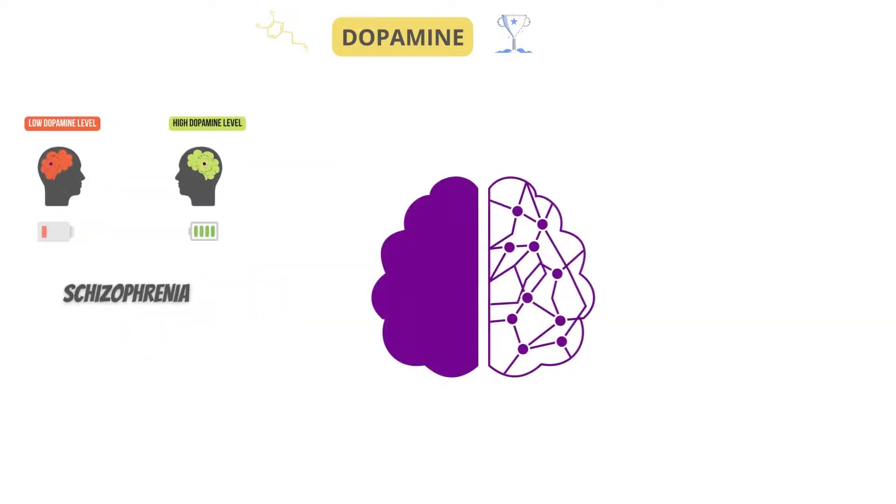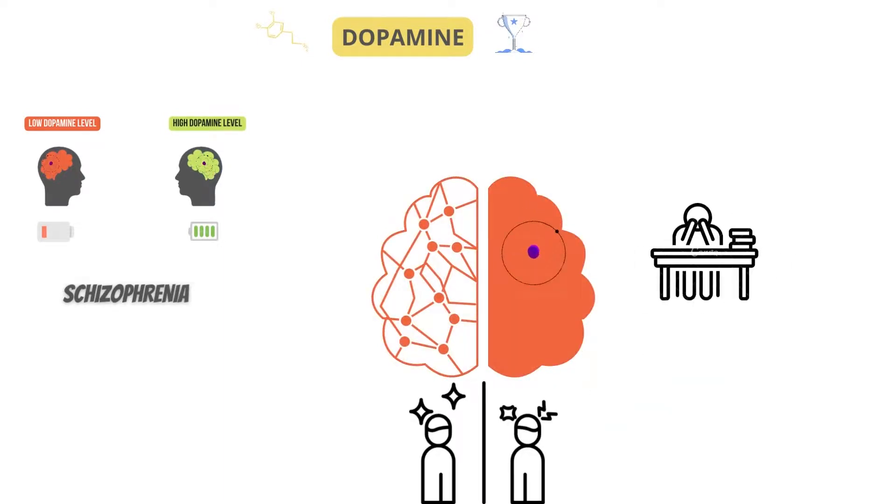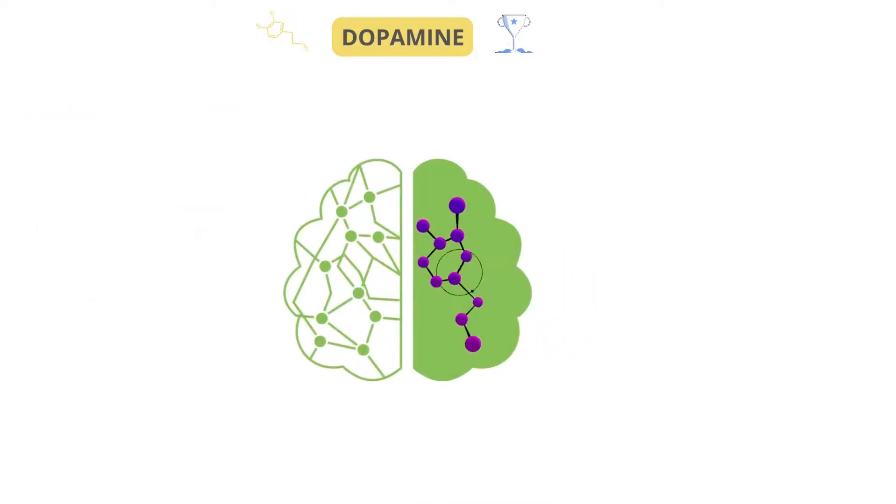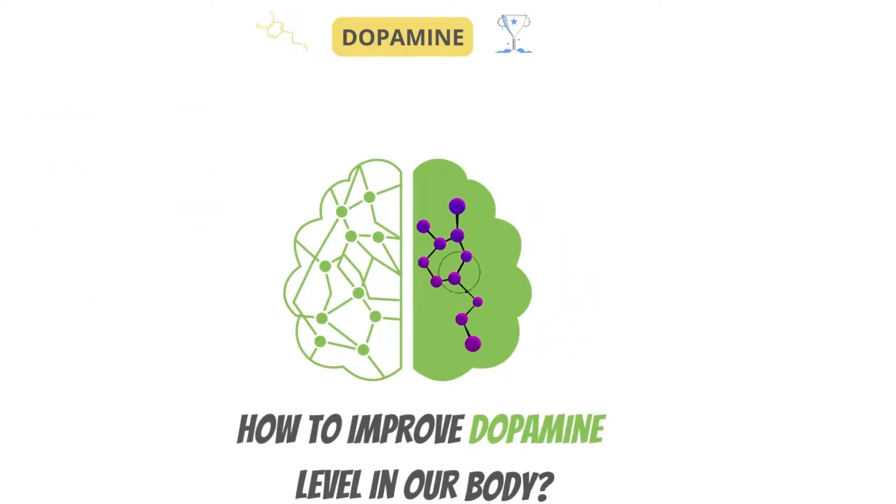Some symptoms of schizophrenia can possibly be caused by having too much dopamine in certain areas of your brain that can cause delusions and hallucinations. Other symptoms are possibly caused by not having enough dopamine in another part of your brain that causes lack of motivation. Now, let's have a look at how we can maintain a healthy dopamine level in our body.